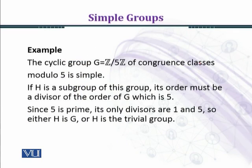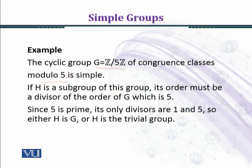Let's consider an example. Every cyclic group G equal to Z over 5Z — that is Z5 — consists of residue classes under modulo 5. There are 5 residue classes: 0, 1, 2, 3, and 4. G equals Z over 5Z, the congruence classes modulo 5, and it is simple under addition. We know that Z over 5Z under addition modulo 5 is a group, and it is a simple group because it has order 5.